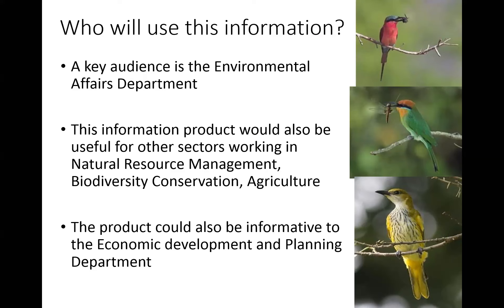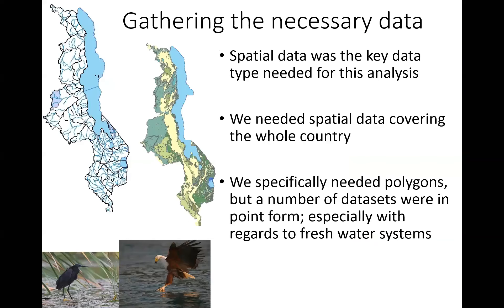The information product we are producing is an ecosystem status map. Our first audience was the Environmental Affairs Department, who wanted to use it to inform other sectors about the status of ecosystems and whether any are endangered. But this information product can also be used with other sectors like agriculture and economic development and planning. The map gives an idea of all the different ecosystem types in Malawi and what their status is across the country.